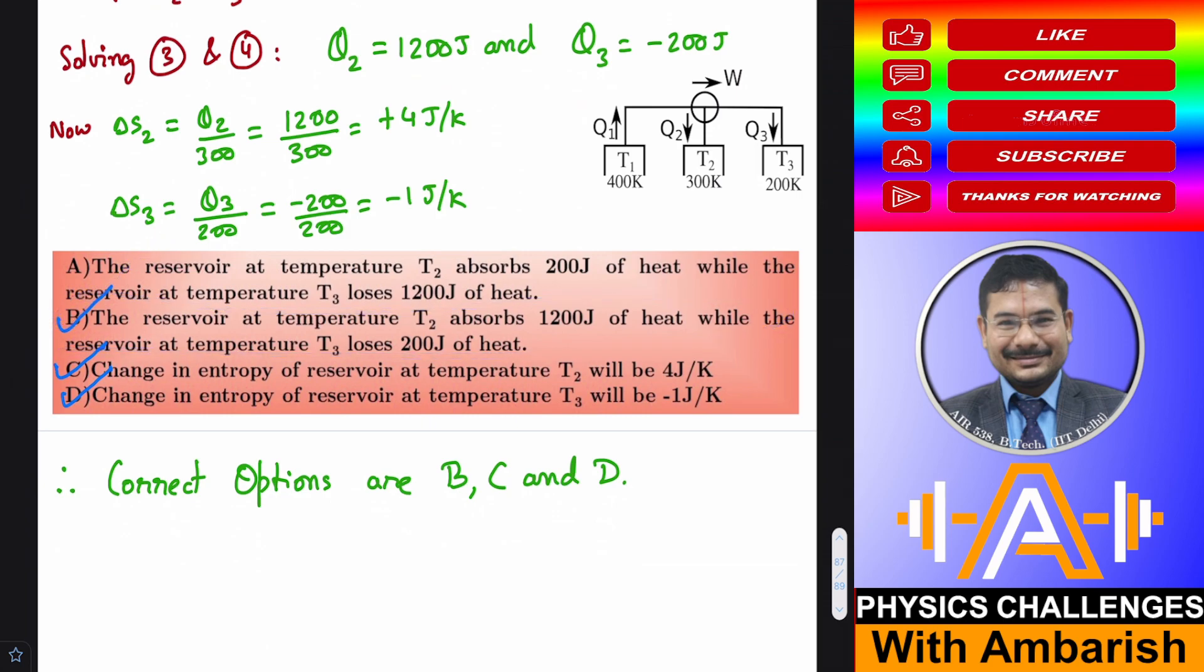Now what about the change in entropy? So delta S2. Here the heat rejected is Q2 and temperature is 300. So Q2 divided by 300. That is 1200 divided by 300. That is plus 4 joule per Kelvin. So change in entropy of reservoir at temperature T2 will be 4 joule per Kelvin. This is also correct.